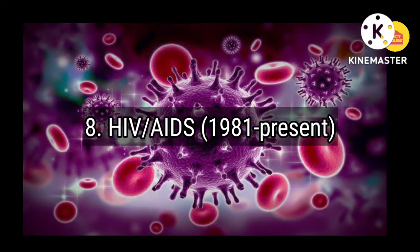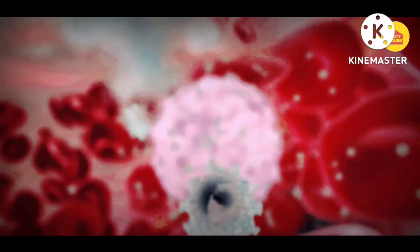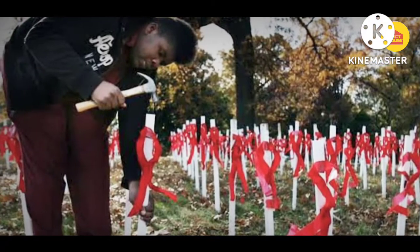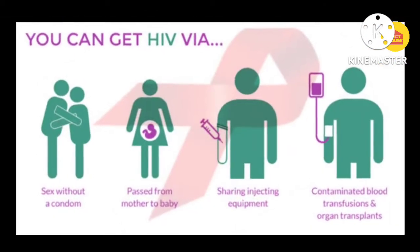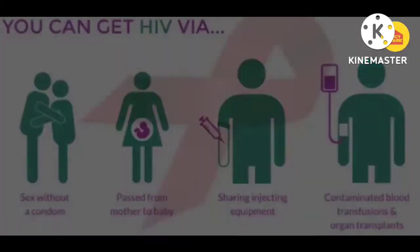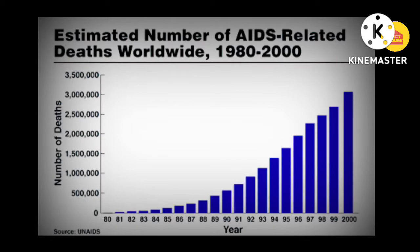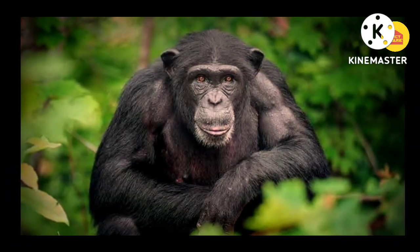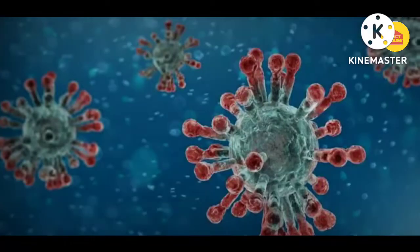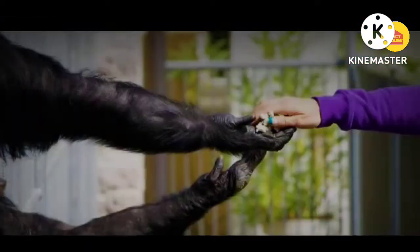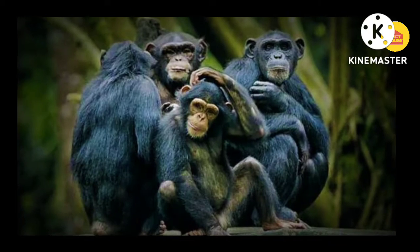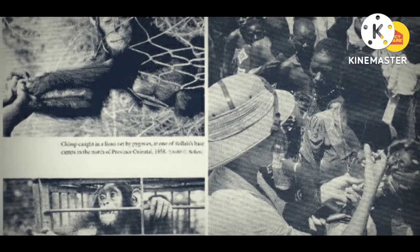Number 8. HIV-AIDS, 1981-Present. It is estimated that around 32 million people have died from this disease. The HIV-AIDS pandemic is caused by the Human Immunodeficiency Virus, HIV, transmitted through contact with the blood, semen, or breast milk of an infected person. The mortality rate has varied over time, from very high to manageable today, with stark differences between developed and developing countries. HIV infection in humans comes from a type of chimpanzee in Central Africa. A version of the chimpanzee virus, called simian immunodeficiency virus or SIV, may have been transmitted to humans through hunting chimpanzees for meat. Studies suggest HIV may have jumped from chimpanzees to humans since the late 1800s.